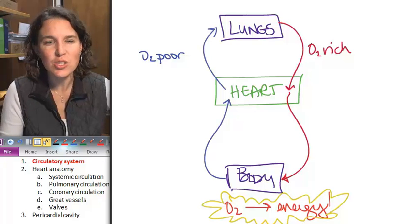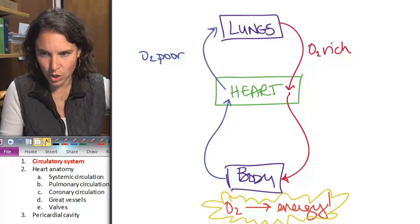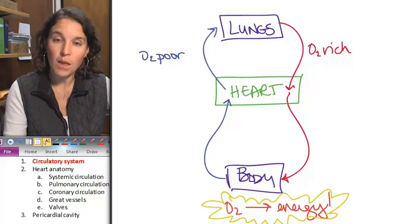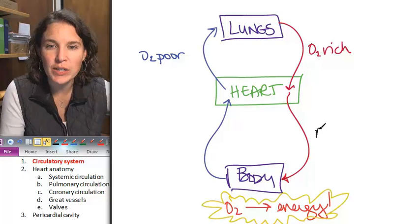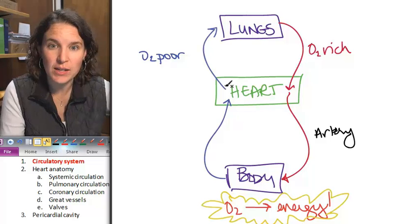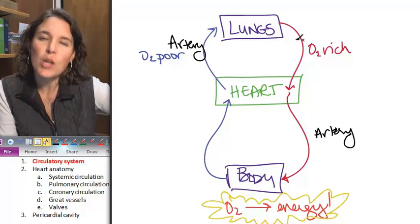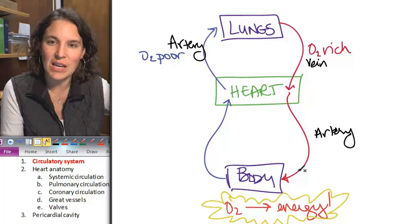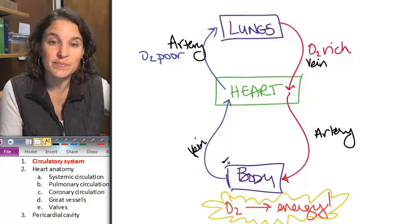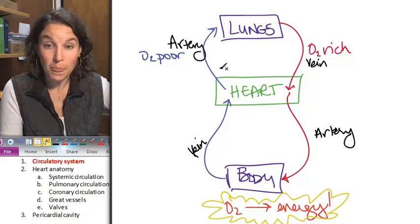Types of vessels. Let's just do a really quick analysis of what our vessels were called. Do you remember? We know that anything that is going away from the heart is an artery. So this one is going away from the heart. It's an artery. We know that if it's going toward the heart, it's a vein. So these guys over here, they're going toward the heart. They're veins.